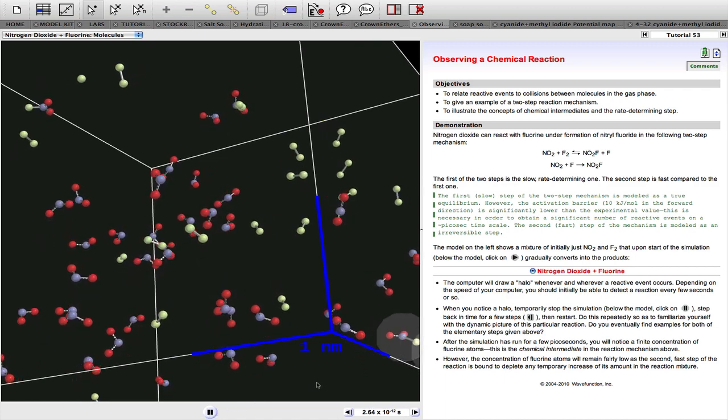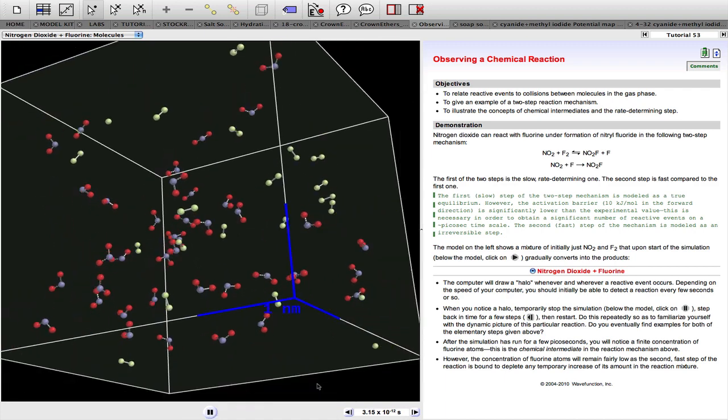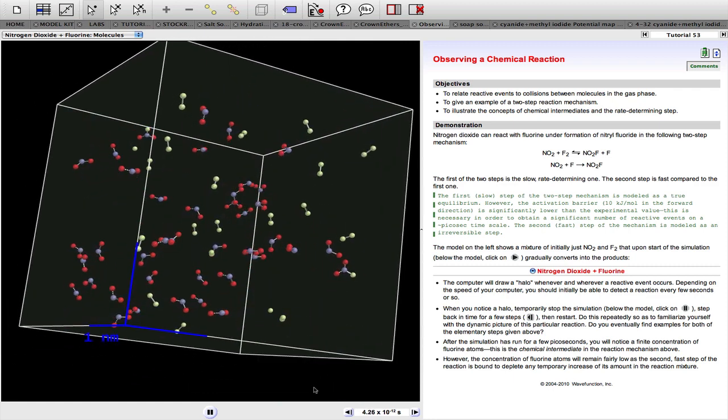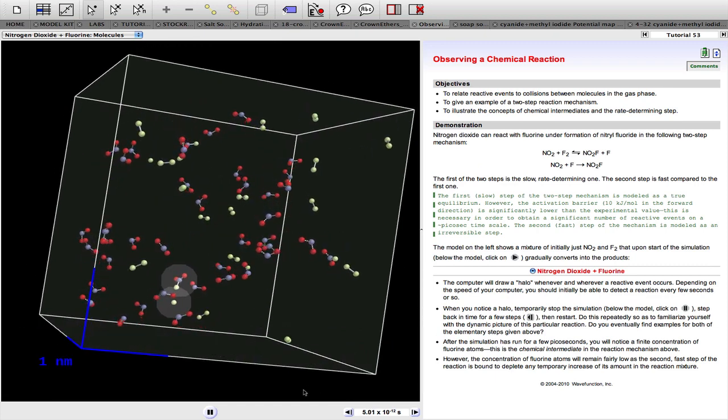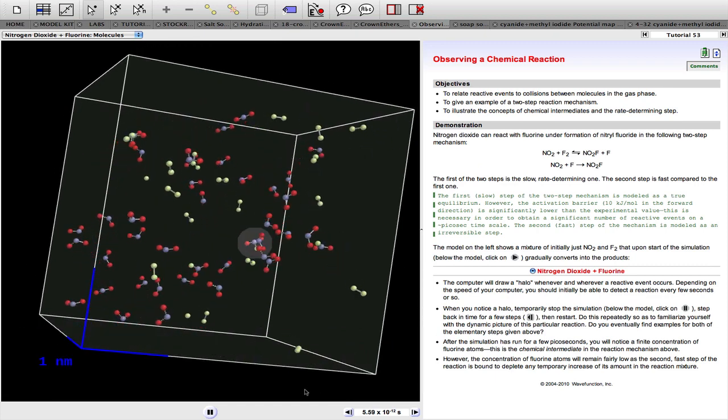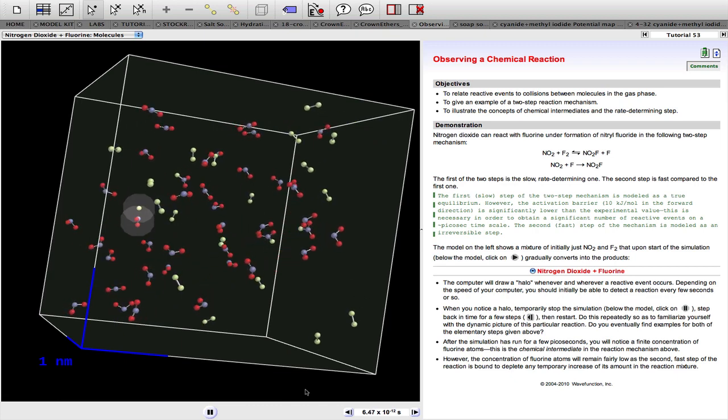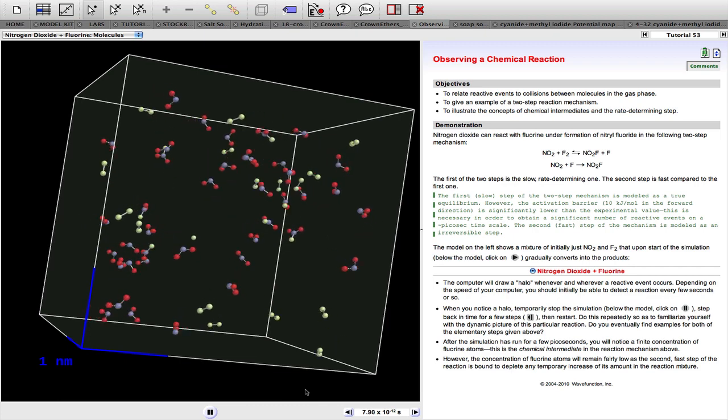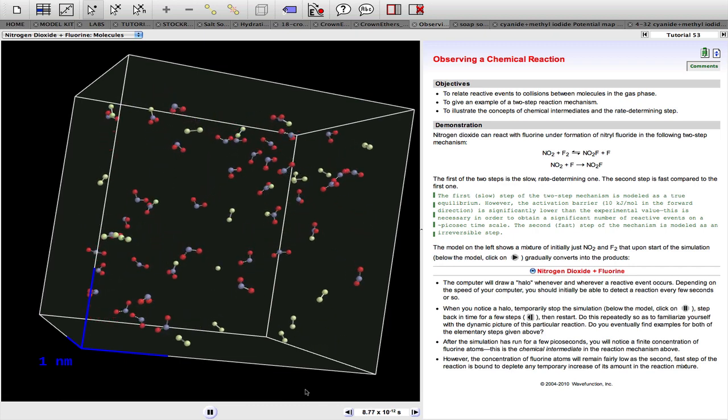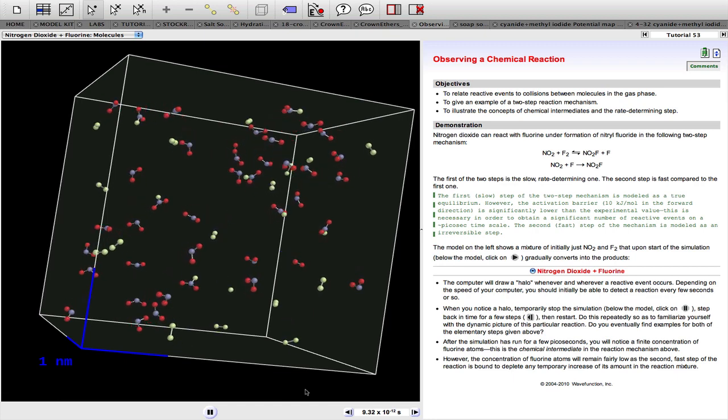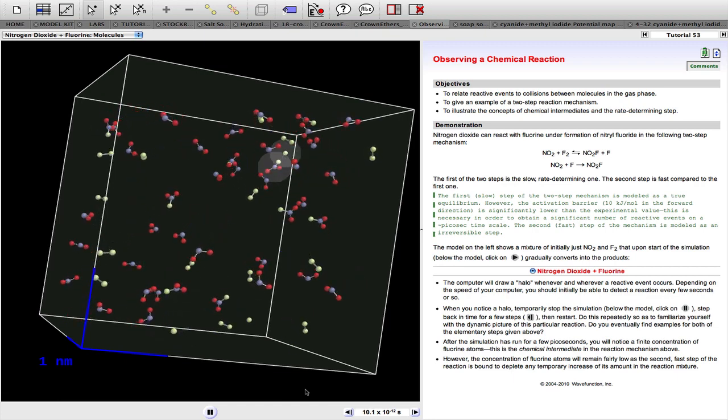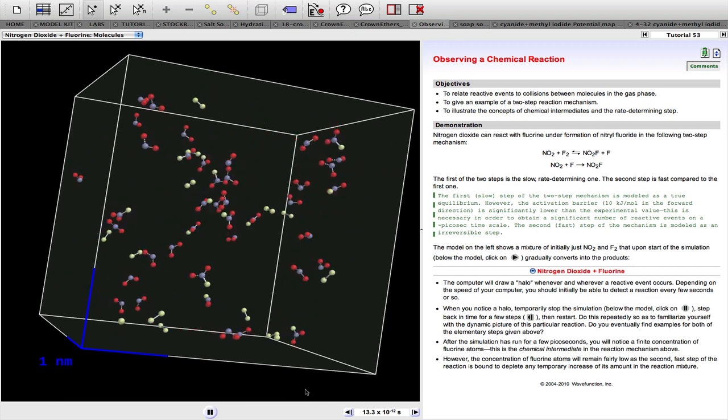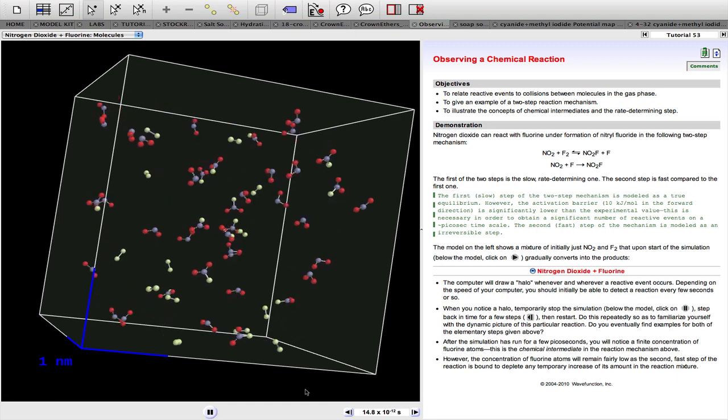Let's keep playing the simulation for a while. The number of reactant molecules decreases and the number of product molecules increases. You also see both productive and unproductive collisions. The latter much more often.